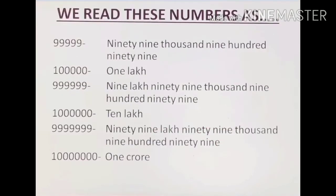We read these numbers as five nines — that is ninety nine thousand nine hundred and ninety nine. After that, one followed by five zeros, which is one lakh. Then six nines, which is nine lakh ninety nine thousand nine hundred and ninety nine. The next number is one followed by six zeros, which is 10 lakh.